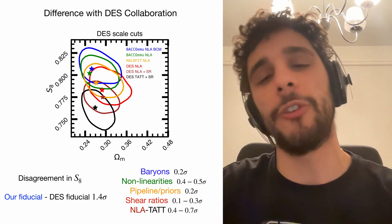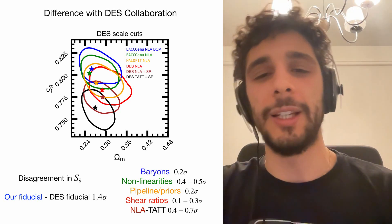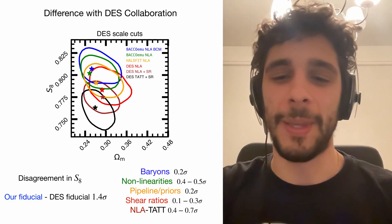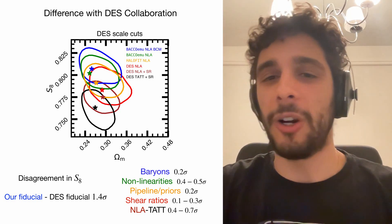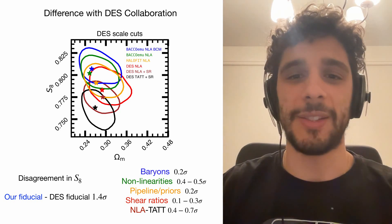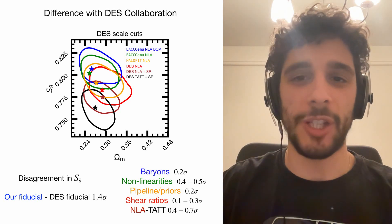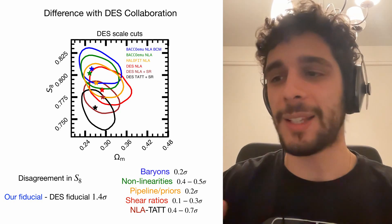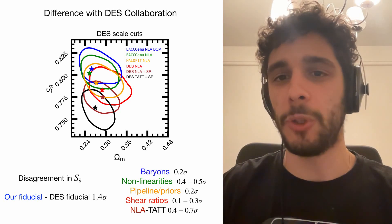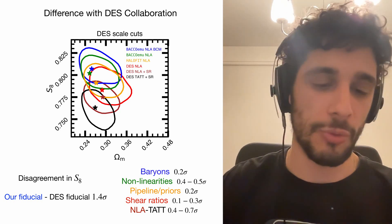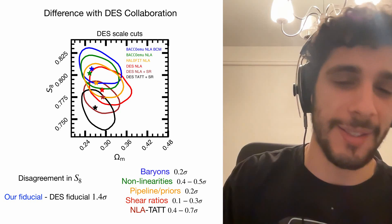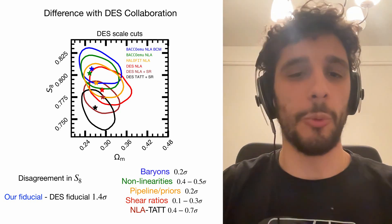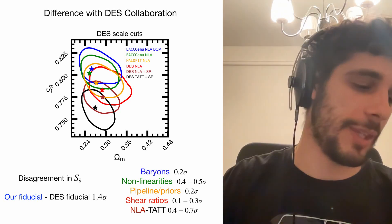The baryons plus non-linearities being 0.7 sigma is a reasonably big deal — that's just improved analysis. We can split the 1.4 sigma discrepancy roughly in half: better modeling (non-linearities and baryons) accounts for about half, and modeling choices (shear ratios, NLA vs. TATT) account for the other half. These choices are not clearly motivated — it's not obvious which is correct.